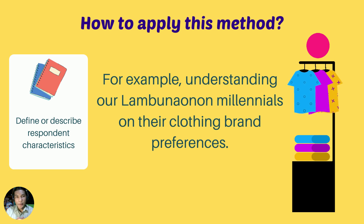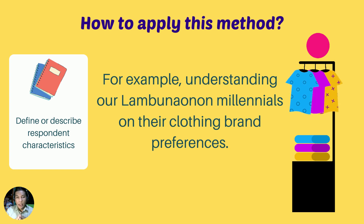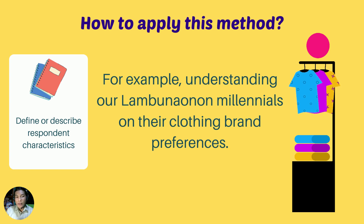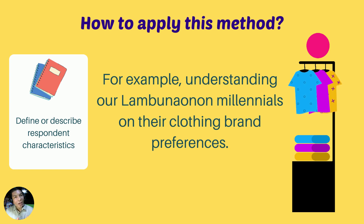How are we going to apply this method? We start by defining or describing the correspondent characteristics. For example, understanding Lambunaunan millennials on their clothing preferences — that is our research problem. This method can be used in many different ways. The main goal of close-ended questions is to arrive at a valid, tangible conclusion about the respondents, such as their behavior, attitude, and everything that pertains to their characteristics — describing and defining those characteristics based on behavior and attitude towards their clothing brand preferences.